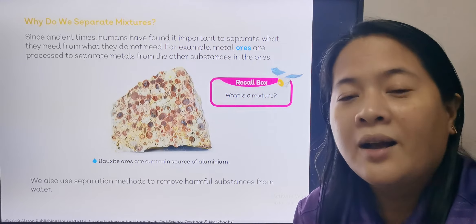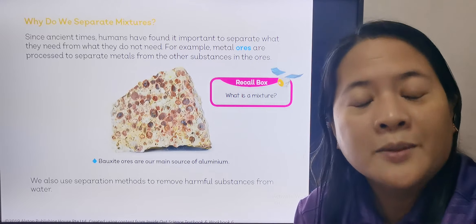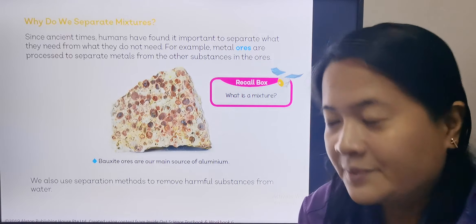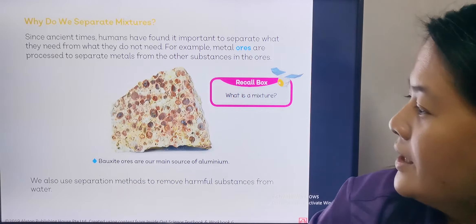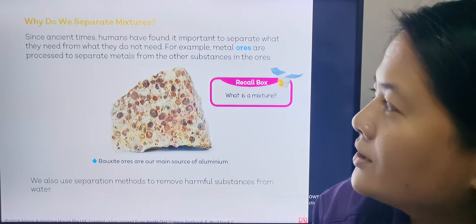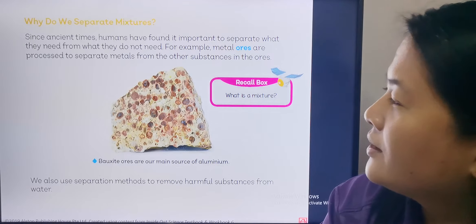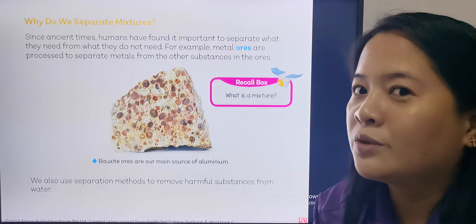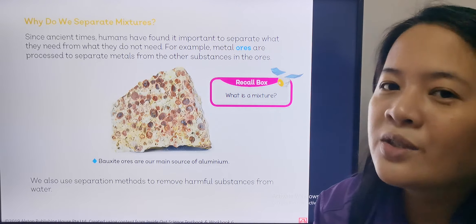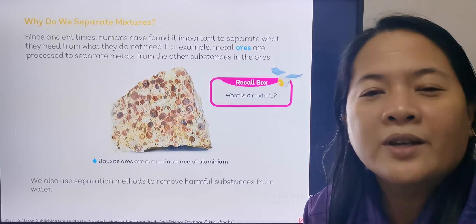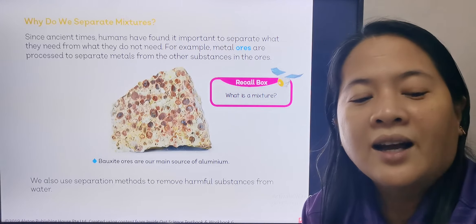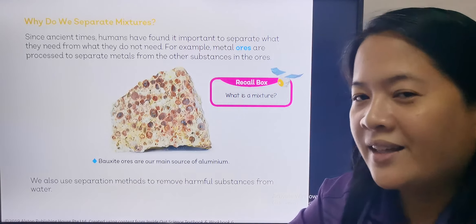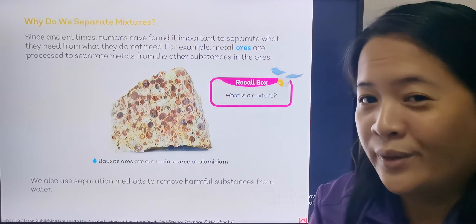A mixture is made up of different substances mixed together or joined together. Since ancient times, humans have found it important to separate what they need from what they do not need. So we separate mixtures because humans think they can get what they need and put back what they don't need.